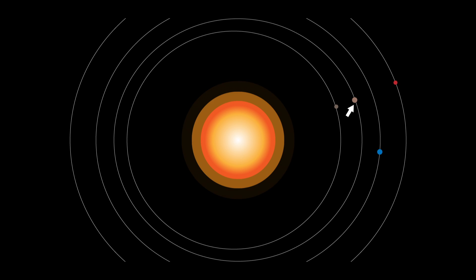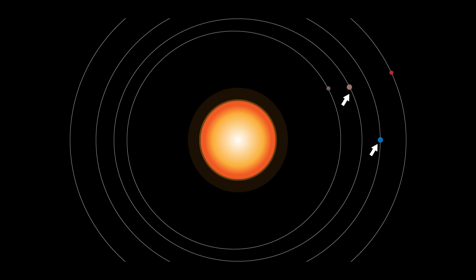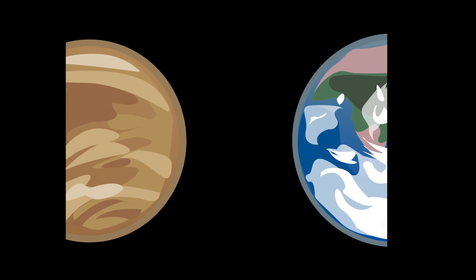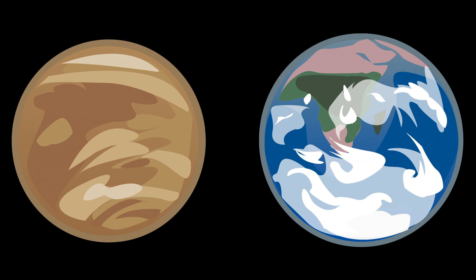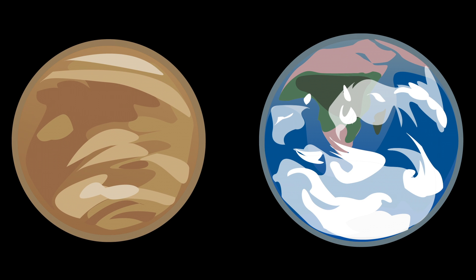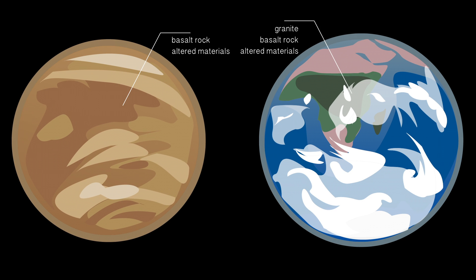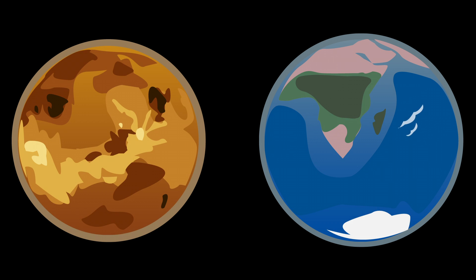In our solar system, Venus and Earth orbit the Sun. If you put Venus and Earth side by side, you will notice they are planets with the same surface makeup and are about the same size. If their rocky surfaces are so similar, why doesn't Venus have an ocean like Earth's?